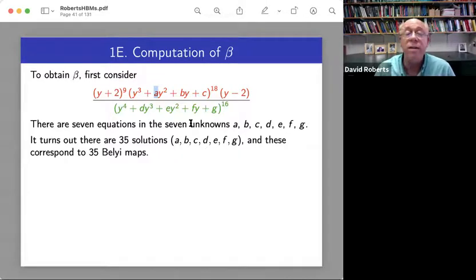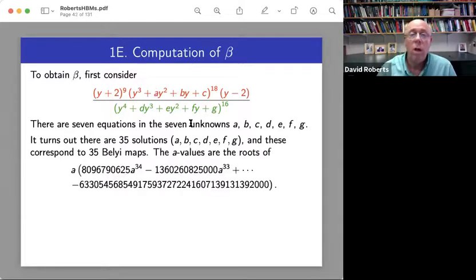So all this is over C. And when you bring in the standard arithmetic to Belyi maps, you know that there's 35 different A's. But there's some arithmetic here because they satisfy a degree 35 polynomial with coefficients in Q.